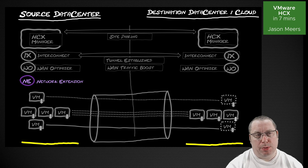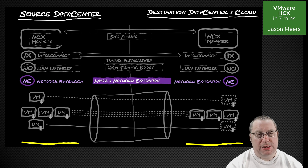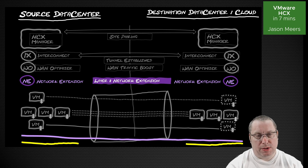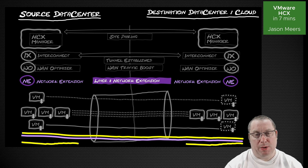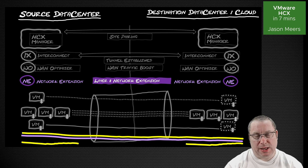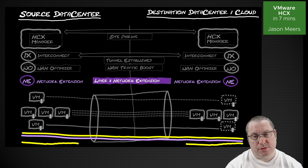We deploy the network extension appliance at the source data center and at the destination data center, and that creates the layer 2 network extension going across the layer 3 network between the two sites, creating a new layer 2 segment or new VLAN on top of that. This VLAN works nicely across both data centers — it's a stretched VLAN, but in a way that network people are happy with, because not every way of stretching a network works well or works properly without causing problems. This is the HCX layer 2 network extension. It doesn't stop you doing a layer 2 extension with NSX or with physical hardware like Cisco OTV, but this is the HCX approach.